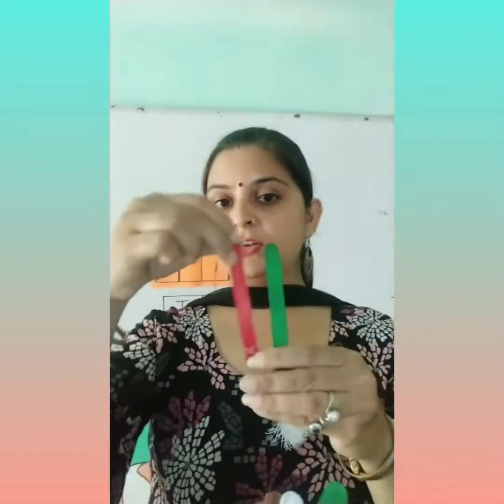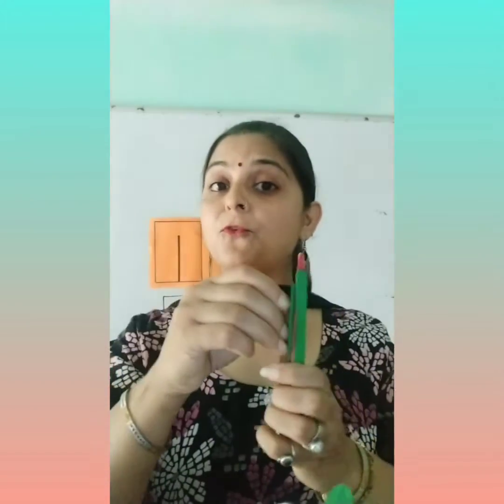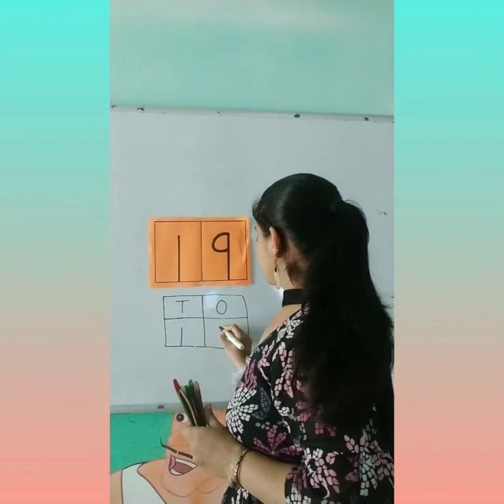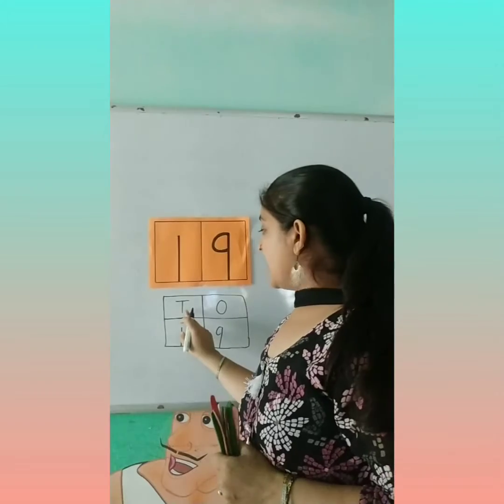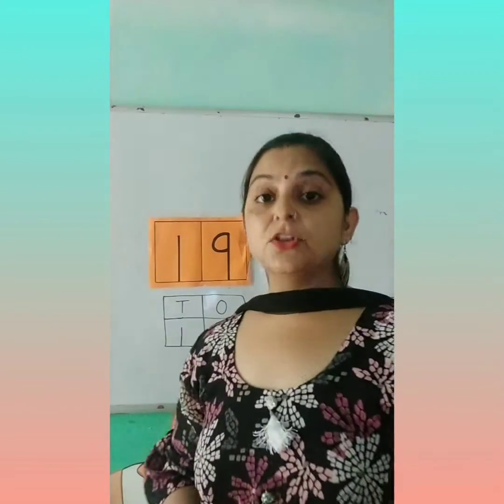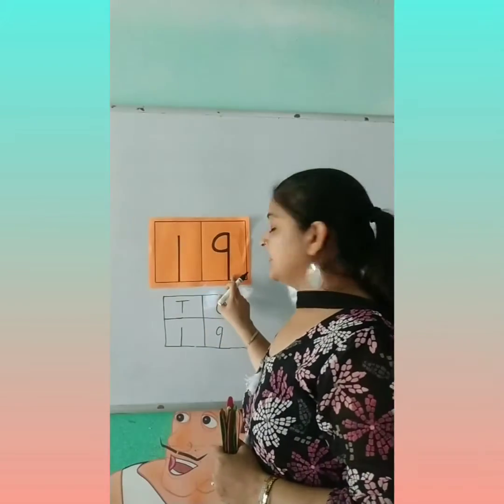So now let's count the remaining ice cream sticks. Abhi hum hamare paas jo baqi bachi hai, hum inko count kareenge. 1, 2, 3, 4, 5, 6, 7, 8 and 9. Aur abhi yeh 9 hai. Loose ones hamare paas kitni bachi hain, ek bundle banane ke baad — 9. So it means 9 ones. So we have 1 ten and 9 ones. So the number is 1, 9, 19.